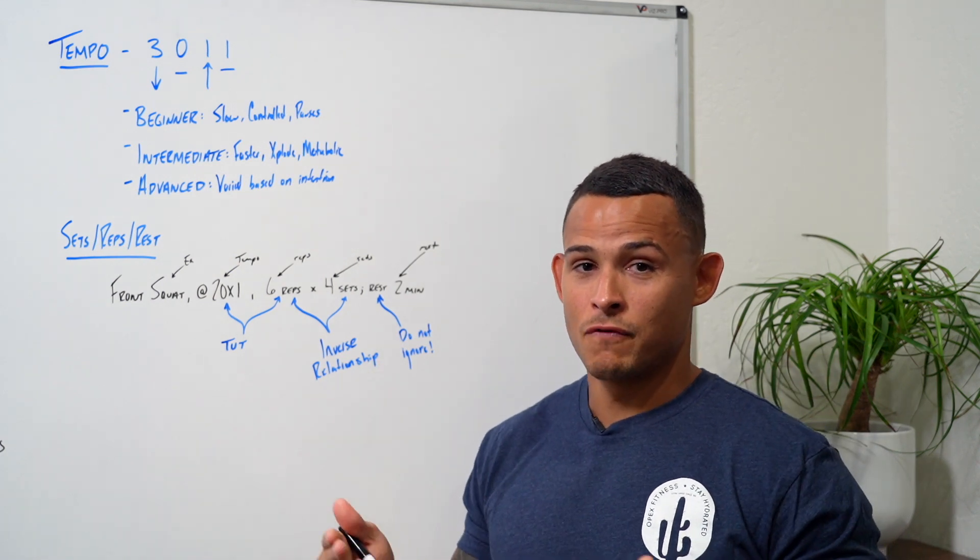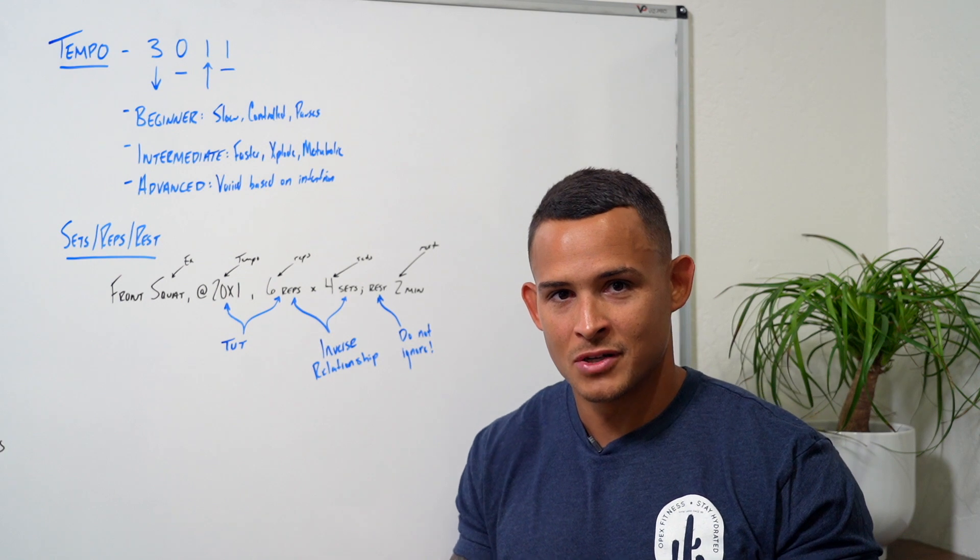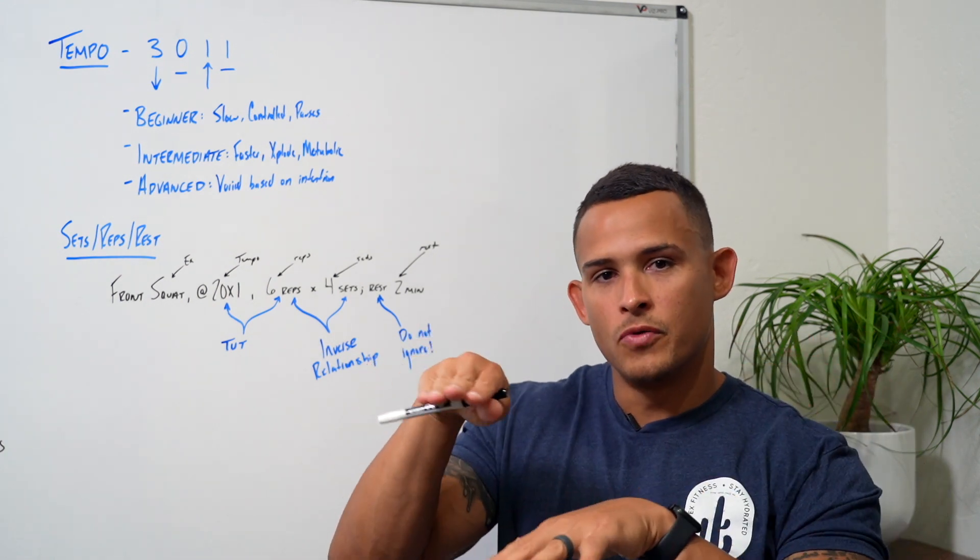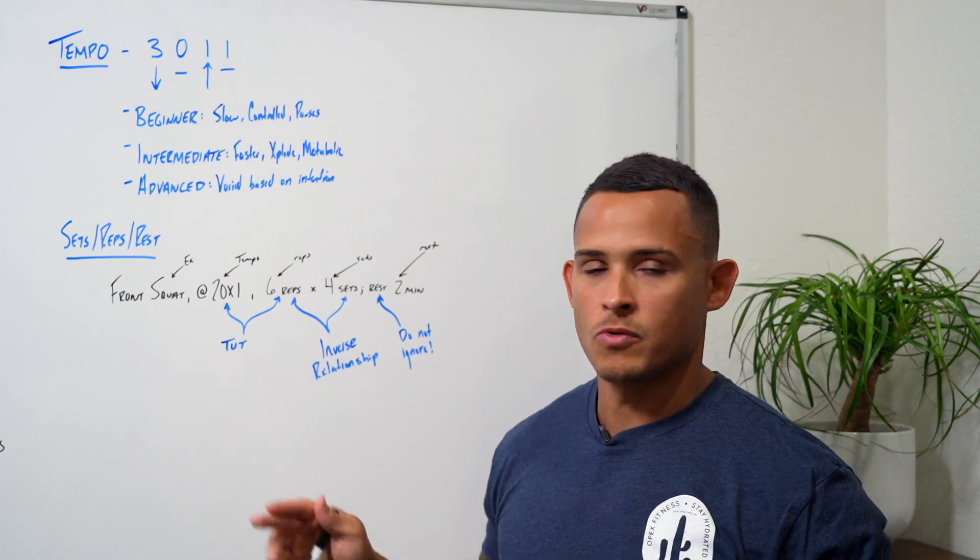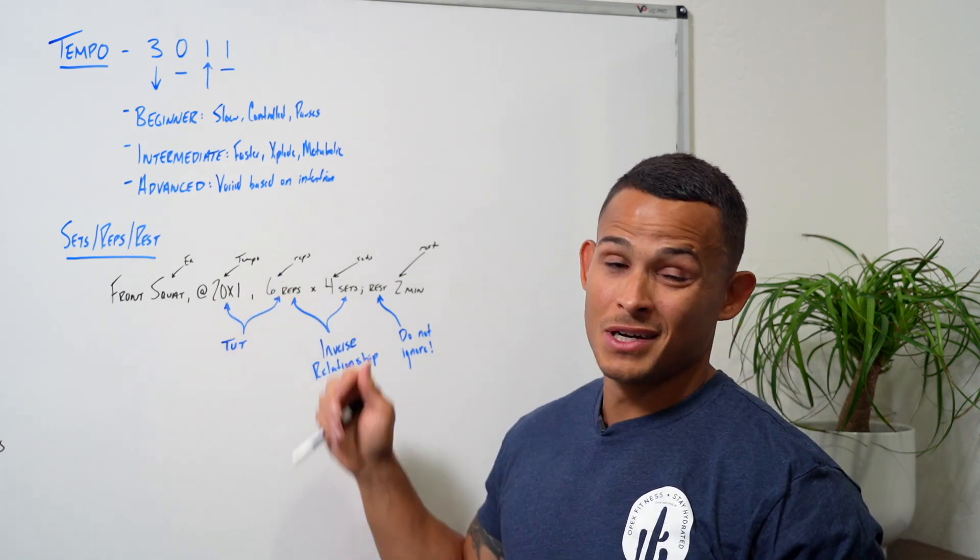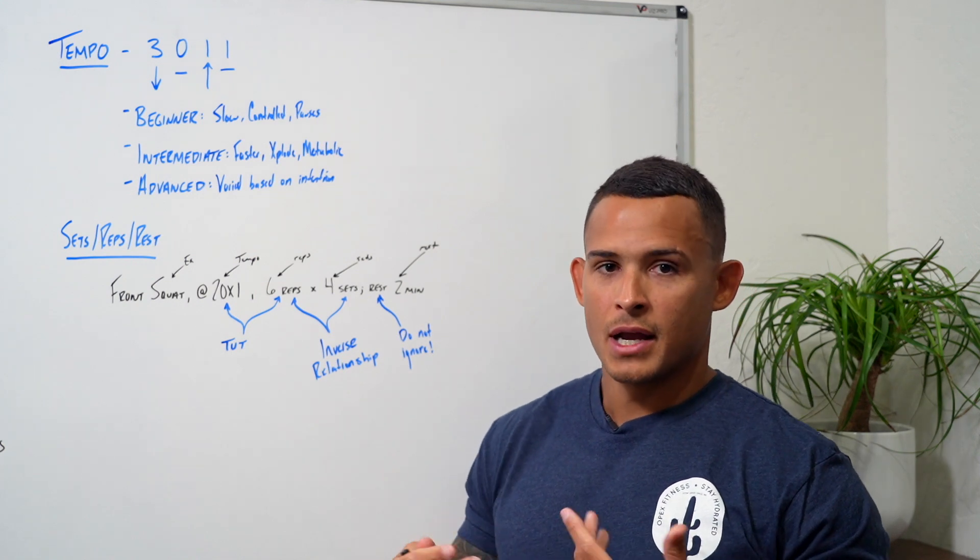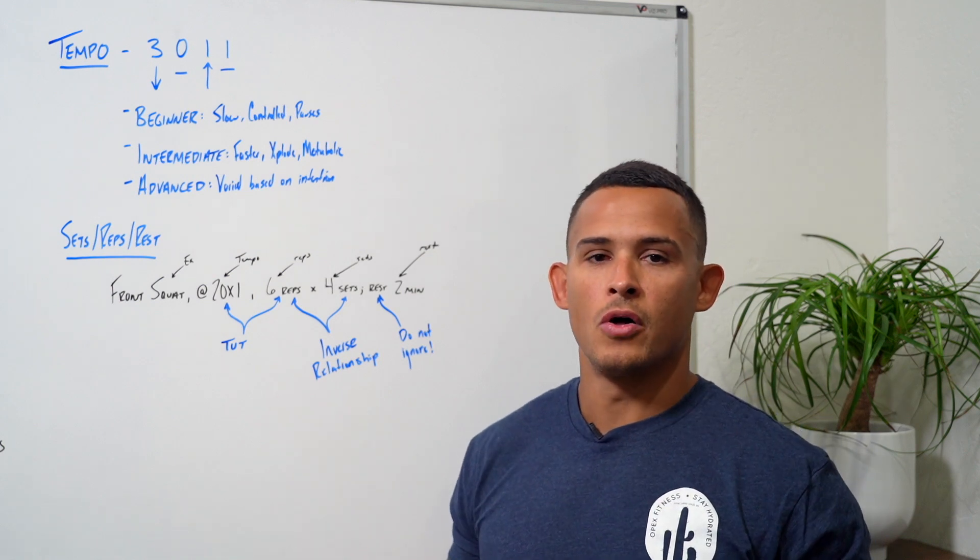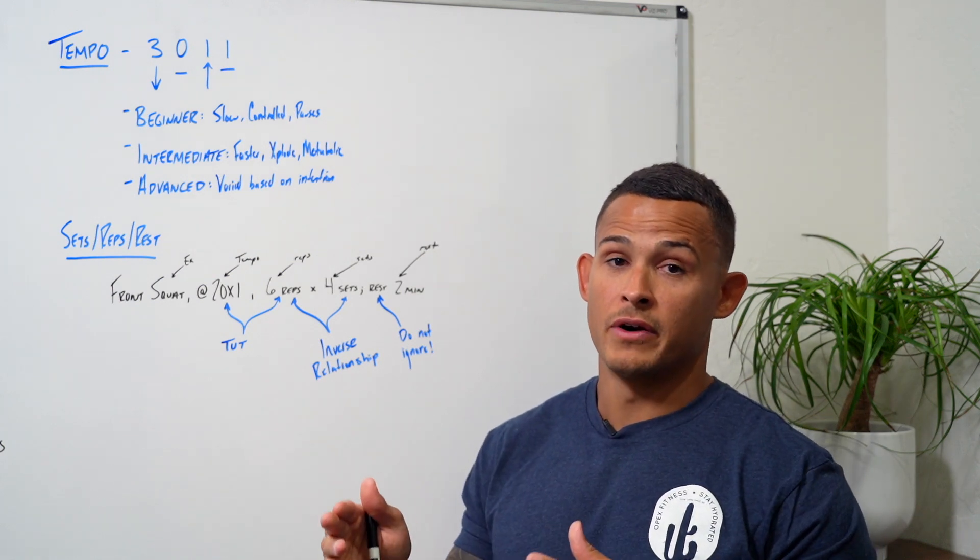In the 4-0-4-0, the goal is to control the eccentric, control the concentric. So you can kind of just imagine the amount of load that's going to be on the bar in the front squat with that tempo. Now if we do the 2-0-X-1 times 12 reps, you can kind of see the difference in the loading on the bar and how the intent is completely different, although the time under tensions are very, very similar.